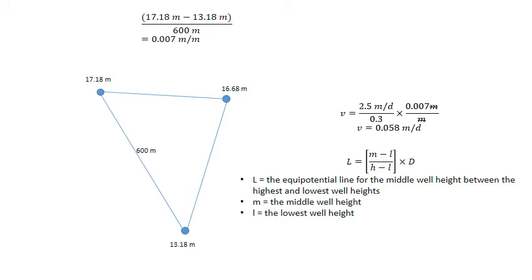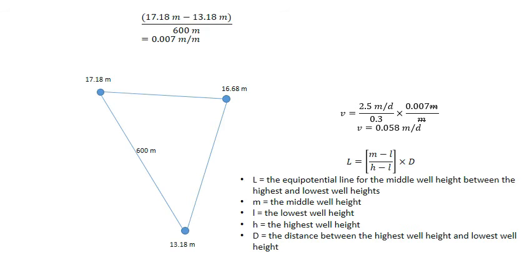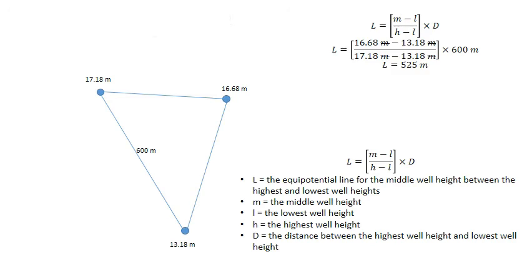M is the middle well height, L is the lowest well height, H is the highest well height, and D is the distance between the highest well height and the lowest well height. When you put all those numbers into the formula we get L equals 525 metres.